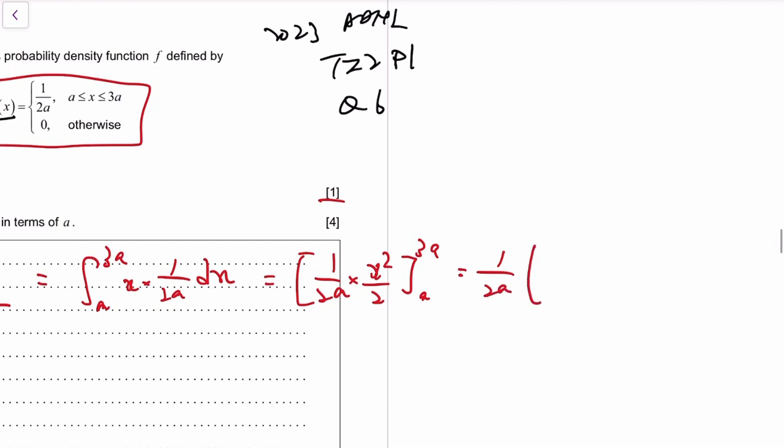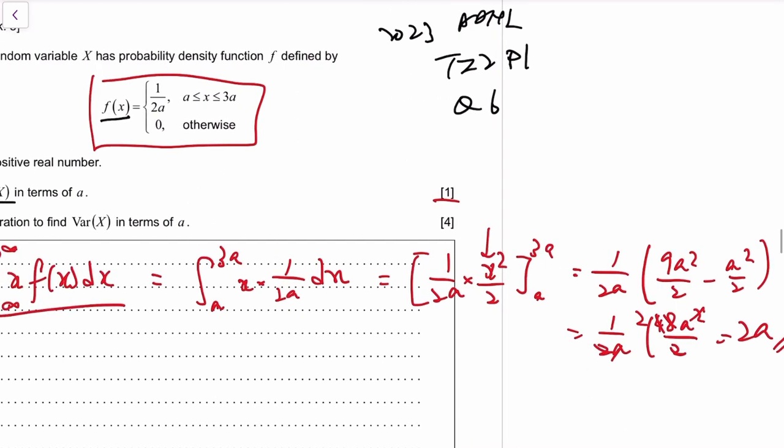So we sub in 3a into x. That actually squares, so that's 9a² over 2, minus a² over 2, which is 8a² over 2, so it's 4a². And then a cancels out, so it's 2a. So the mean is 2a. But if you know the meaning of this distribution, that could be obvious.